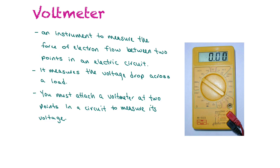A voltmeter is an instrument used to measure the force of electron flow between two points in an electric circuit — specifically, it measures the voltage drop across a load. A load is anything that slows down the flow of electrons: a light bulb, a motor, or a resistor are all examples of a load. To measure that voltage drop, you attach the voltmeter at two different points — you don't put it as part of the circuit; instead you place it across a load.